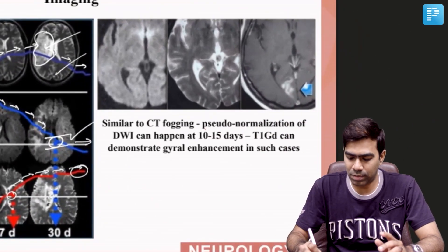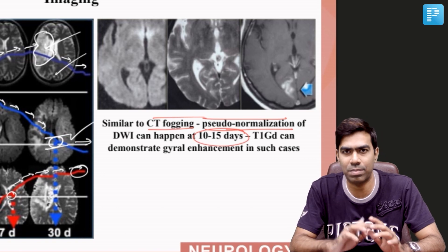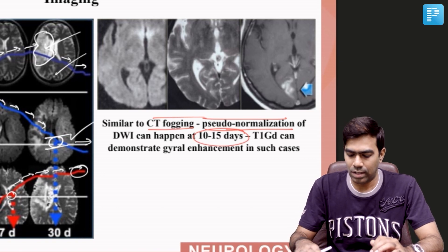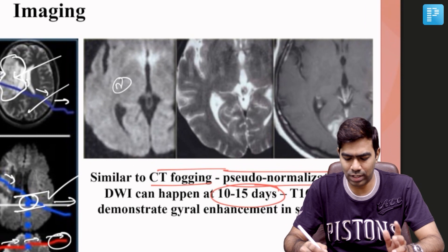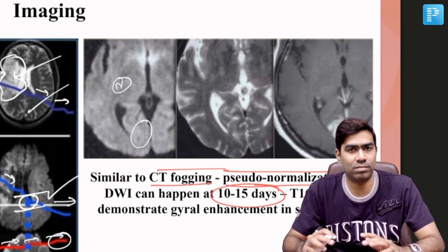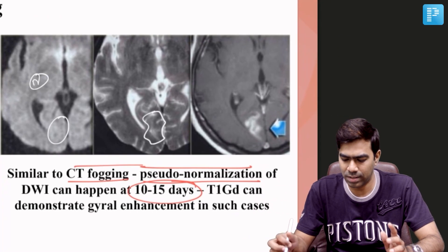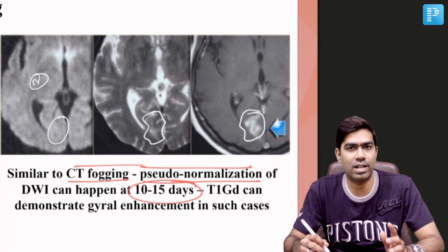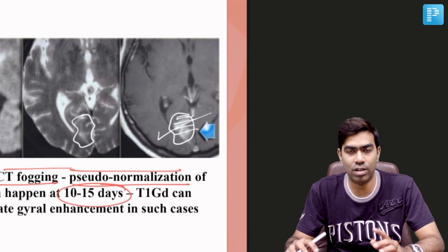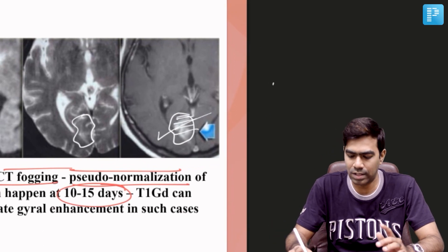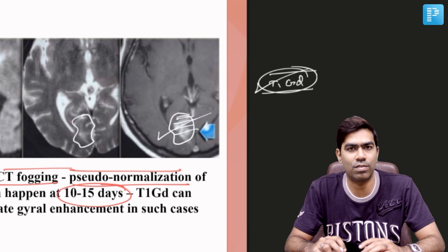There can be pseudo-normalization in diffusion-weighted imaging — similar to CT fogging — occurring around 10 to 15 days, and typically by 30 days, where DWI appears completely normal. For example, a patient with a posterior circulation stroke in the right PCA territory may show nothing on DWI at 10 to 15 days, while FLAIR shows slight abnormality. In such cases, gadolinium-enhanced T1-weighted sequence is the confirmatory sequence, as it will clearly show enhancement consistent with ischemic stroke.